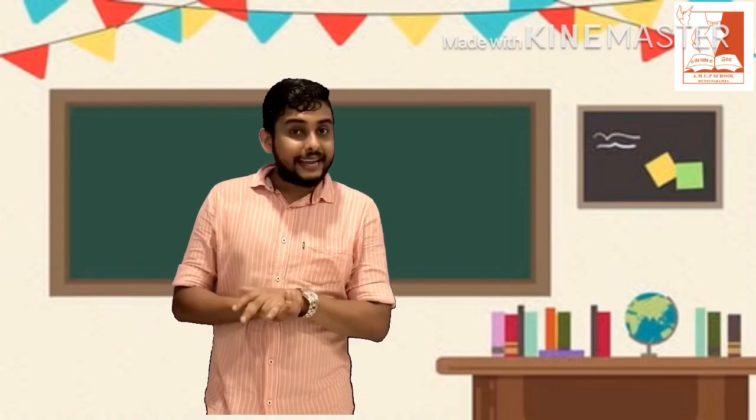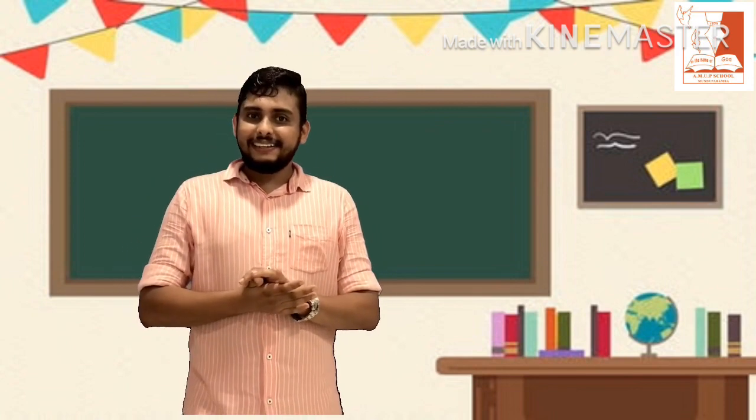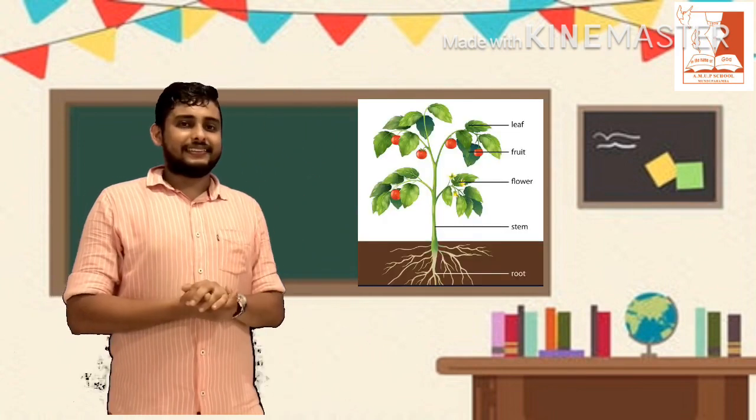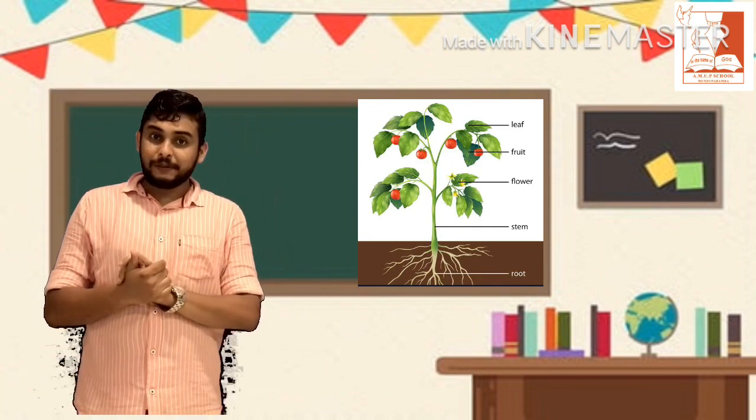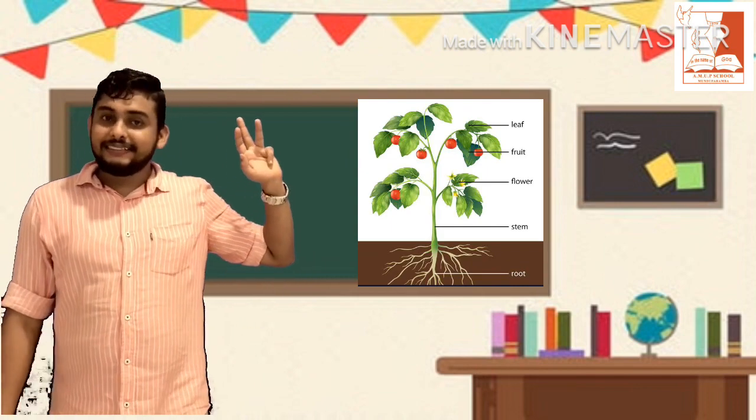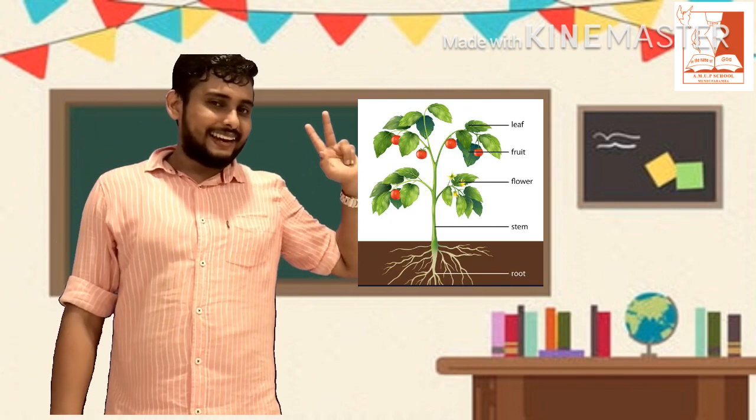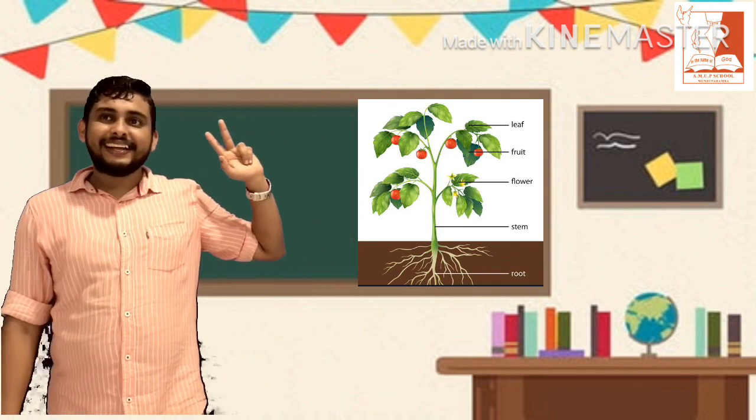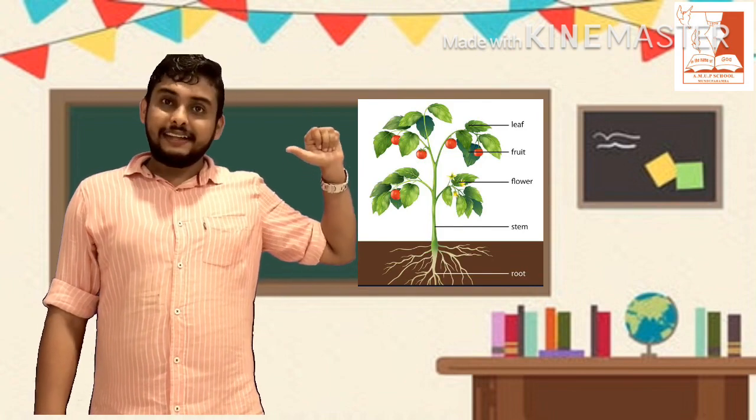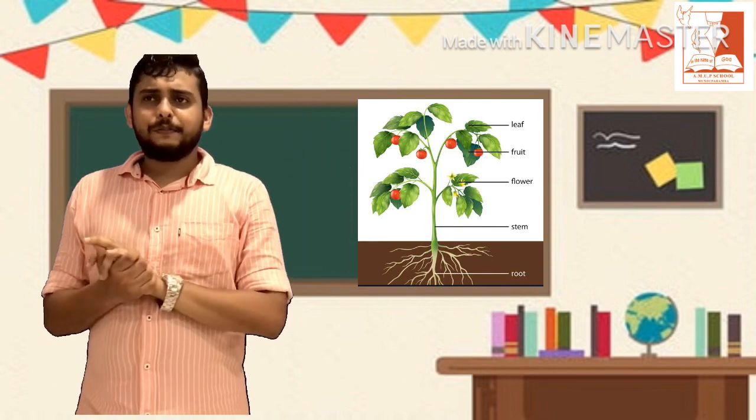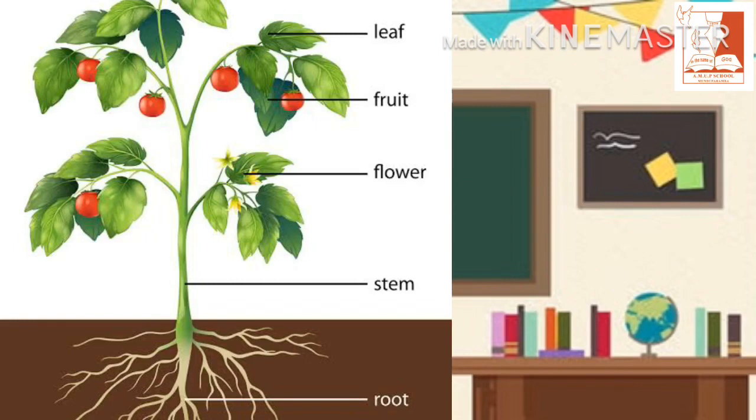Now, did you get the different parts of a plant? Look at this picture. Which are the different parts of a plant? Root, stem, flower, fruit, leaf. Very good. Root, stem, flower, fruit, leaf, isn't it?